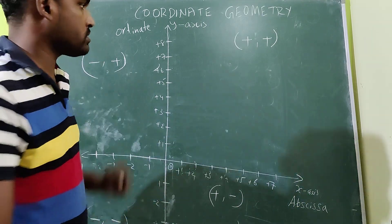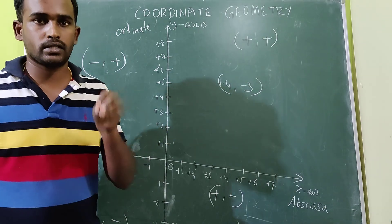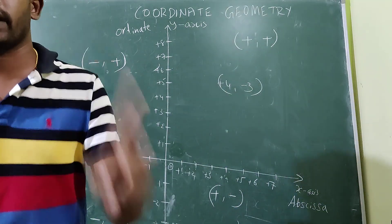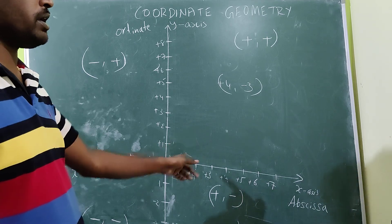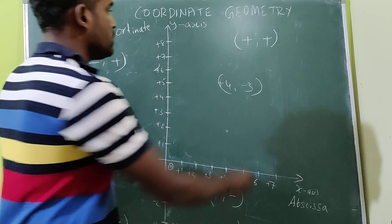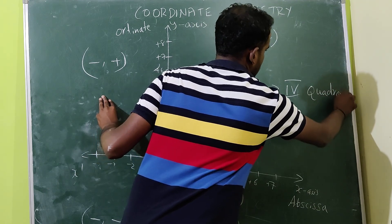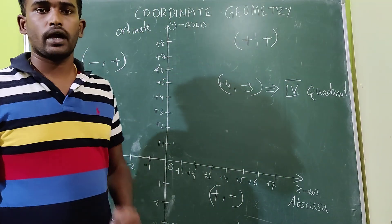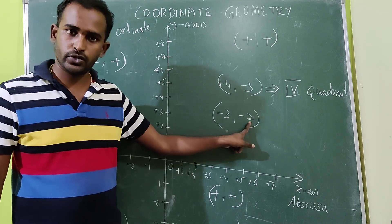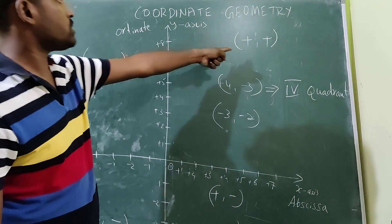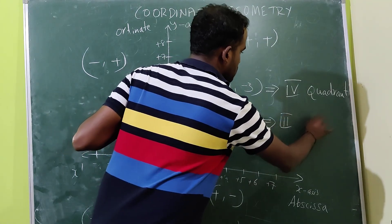One question they may ask in the examination: a point (+, -) lies in which quadrant — first, second, third, or fourth? Plus, minus means it is in the fourth quadrant. Therefore this particular point lies in the fourth quadrant. Another example: (-3, -2) — first number is minus, second is also minus, minus minus means third quadrant. Therefore it lies in the third quadrant.